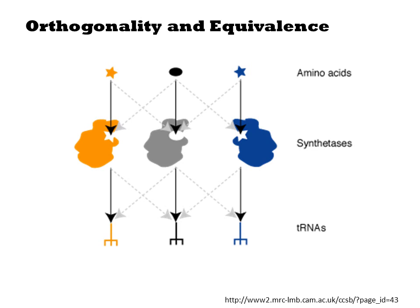In the context of this specific system, orthogonality and equivalence represent two extremes of how a biomolecule will interact with others in the engineered cell. An equivalent synthetase would have the same set of interactions with the native species, and an orthogonal synthetase would have no interactions with the native species.